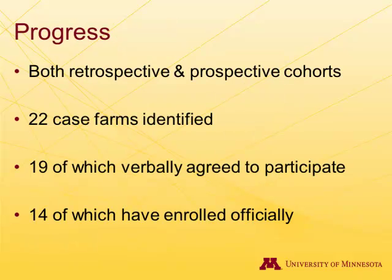Going back to the index farms and neighboring farms — a small update on our progress. We have both retrospective and prospective cohorts in this group. We've got 22 case farms that we've actually identified, 19 of which have verbally agreed, and 14 of which we've actually gotten to enroll officially.